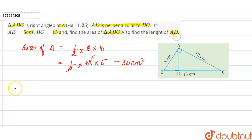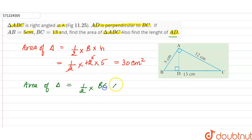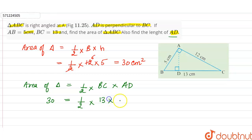Now in part B of the question, we are asked to find the length AD. To find the length AD, the area of the triangle will be equal to half, taking the base as BC, and the corresponding altitude to base BC is AD. We already have the area of triangle ABC which is 30 centimeters square.